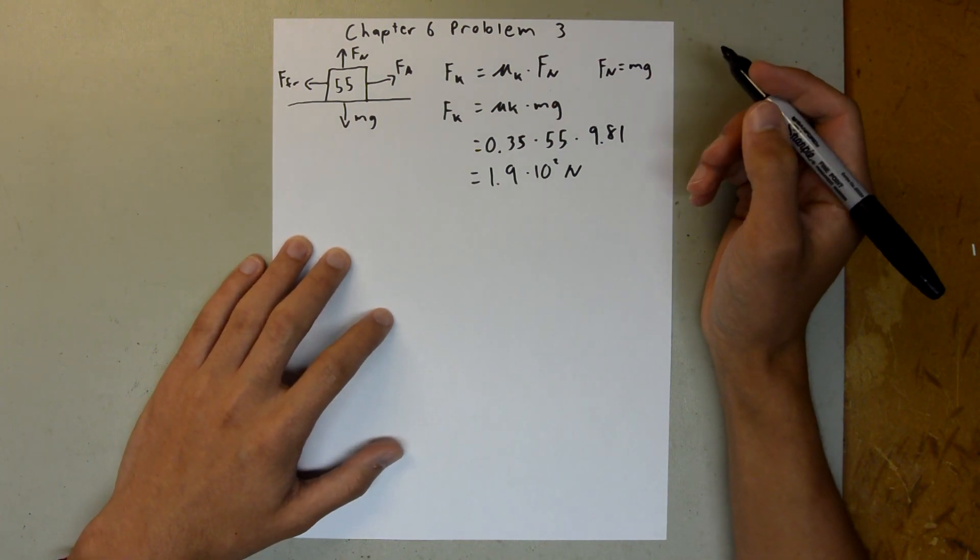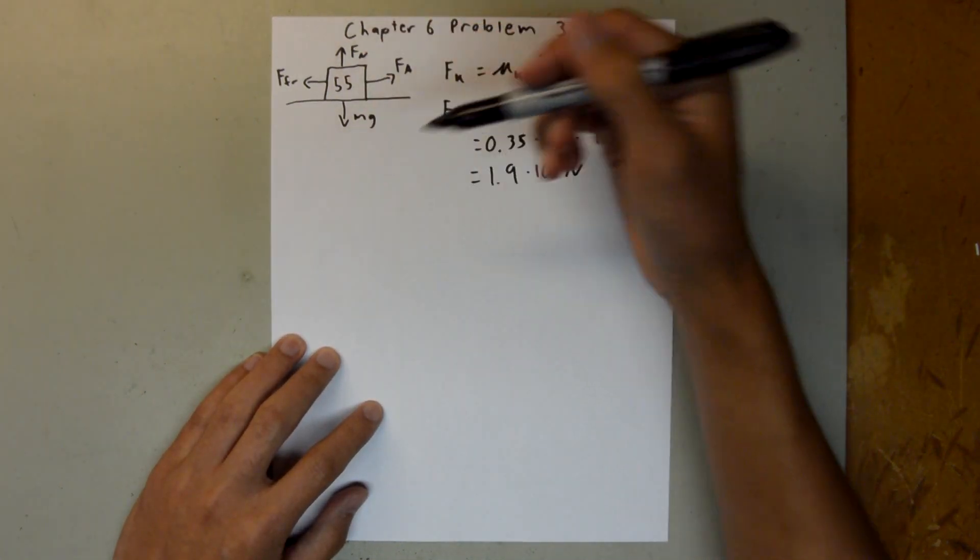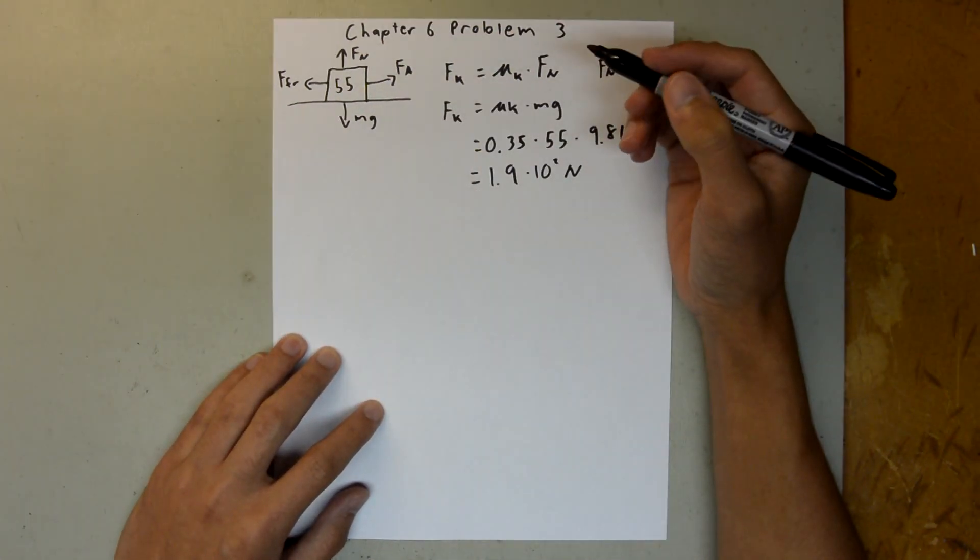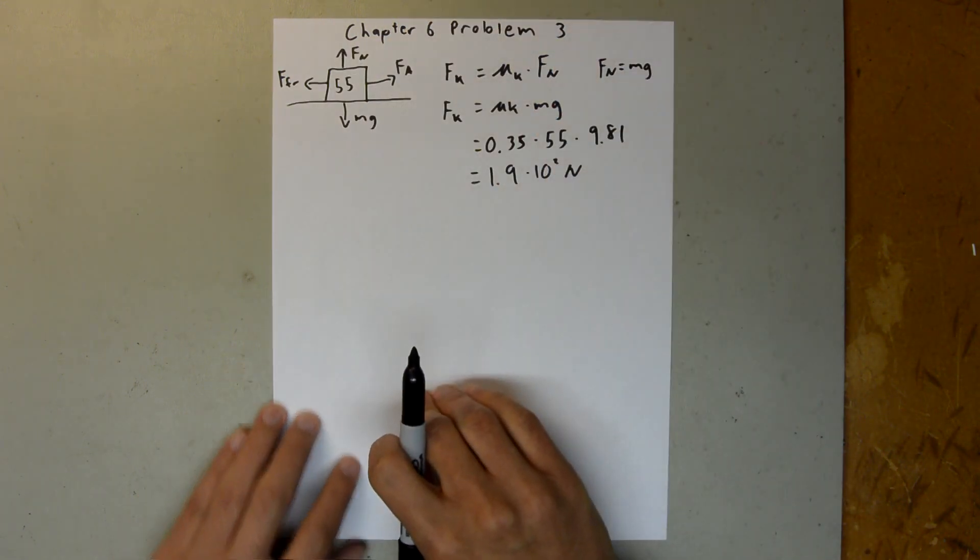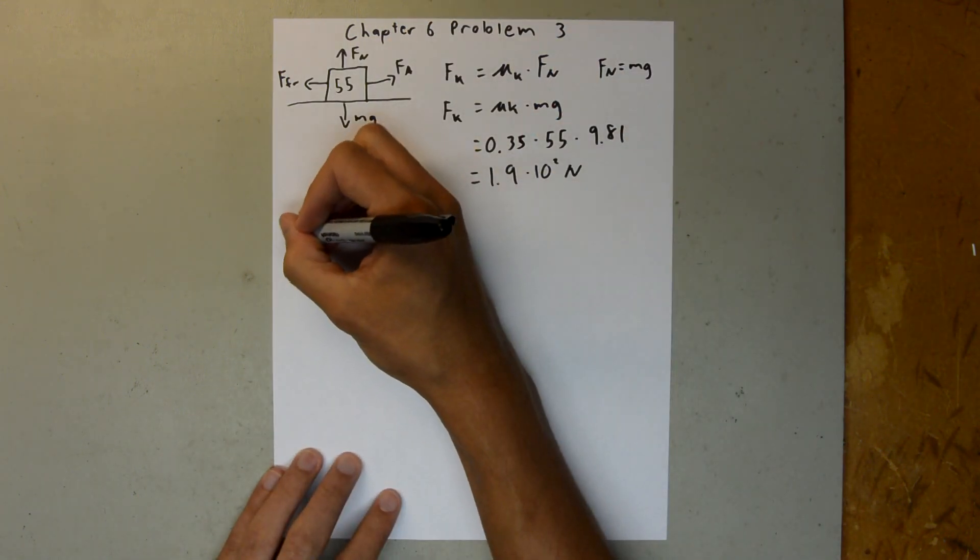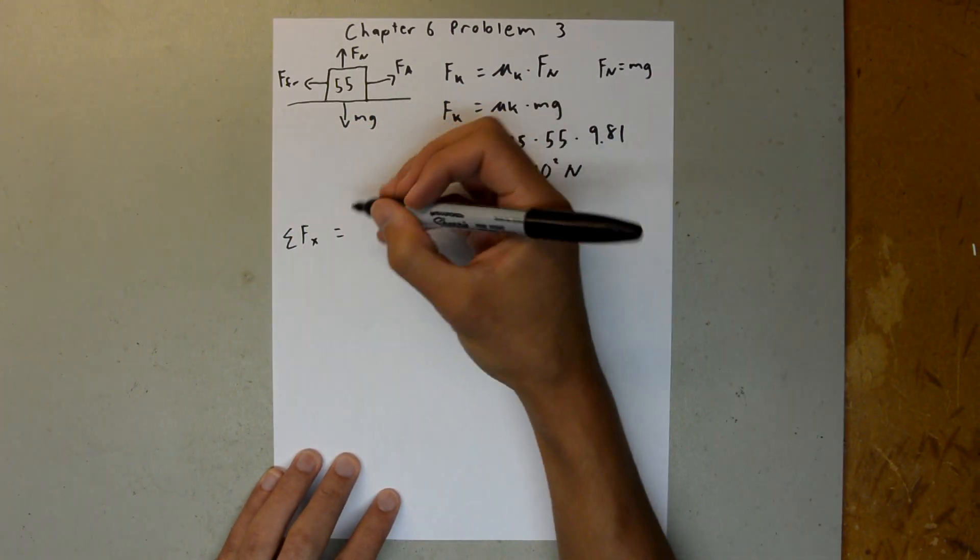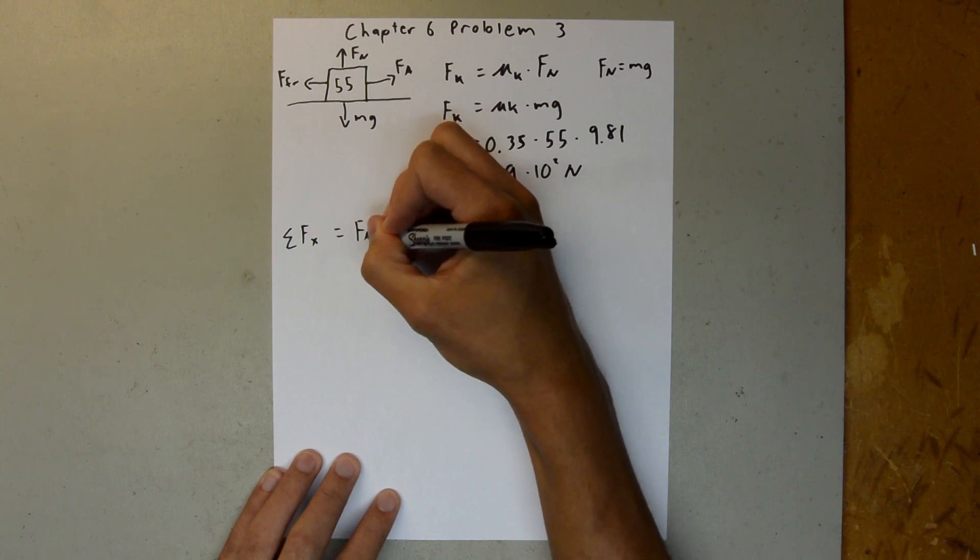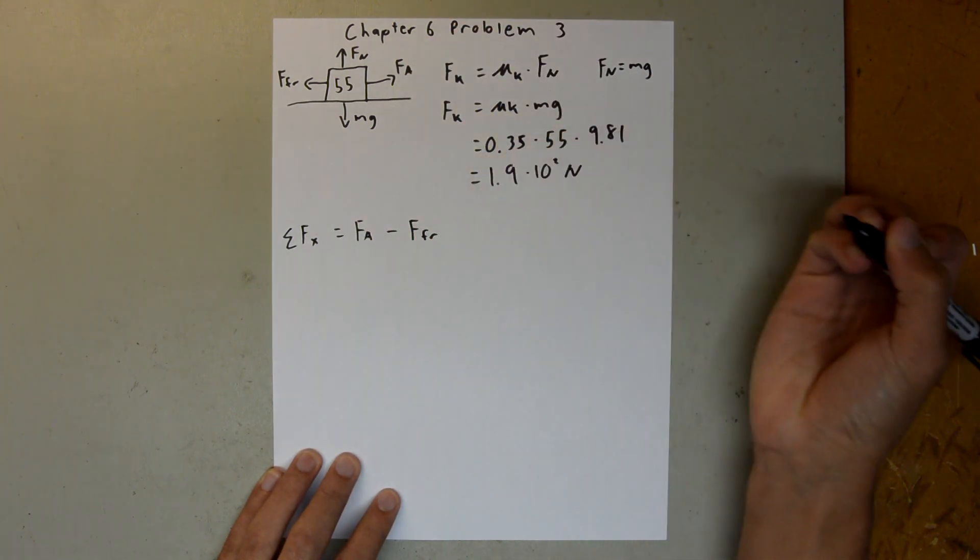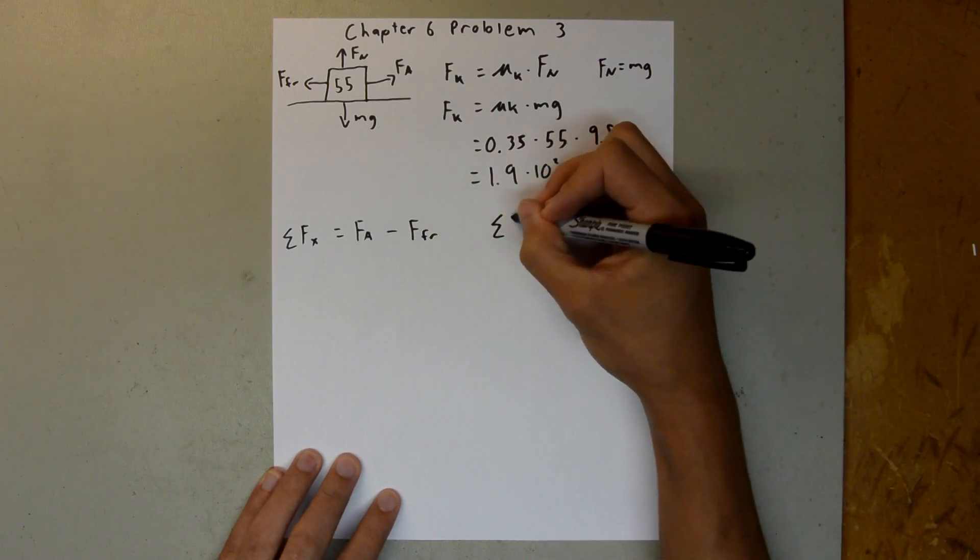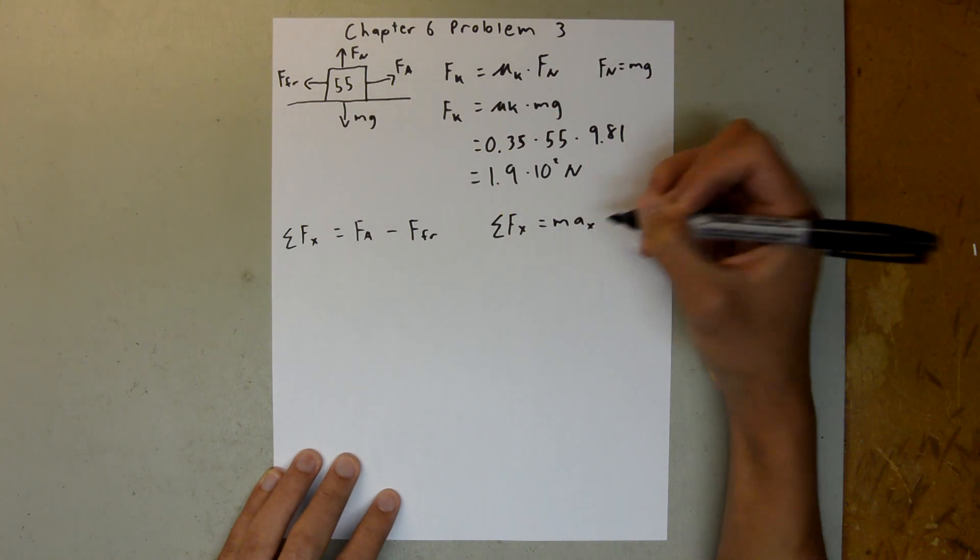And now we are asked to find the acceleration of the crate. And, like I said, there is no motion in the y direction, so there is no acceleration in the y direction. The only acceleration is in the x direction. So, what we can say is, the sum of forces in the x direction is equal to your force applied here minus the force of friction. And we can also say, the sum of the forces in the x direction is equal to mass times acceleration in the x direction.